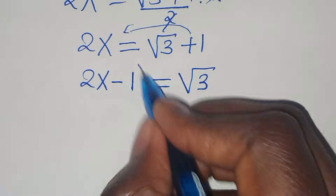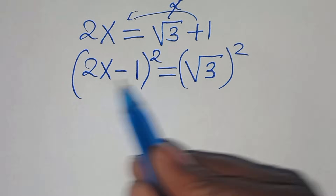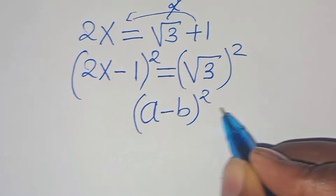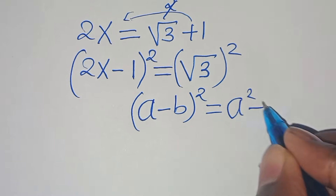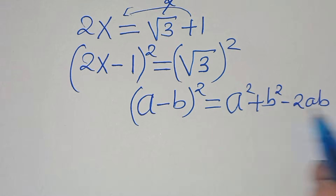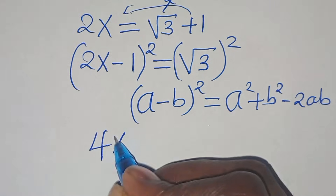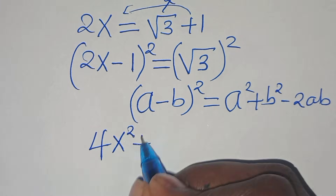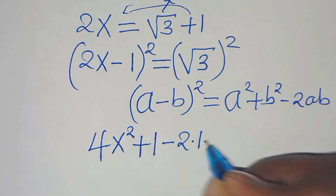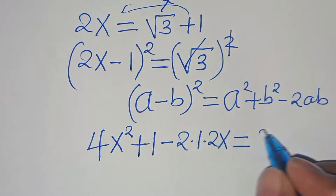Squaring both sides, we get 2x minus 1 squared. This is in the form of (a minus b) squared which expands as a squared plus b squared minus 2ab. Applying this identity, 2x minus 1 squared gives 4x squared plus 1 minus 4x, and this equals square root of 3 squared which is 3.